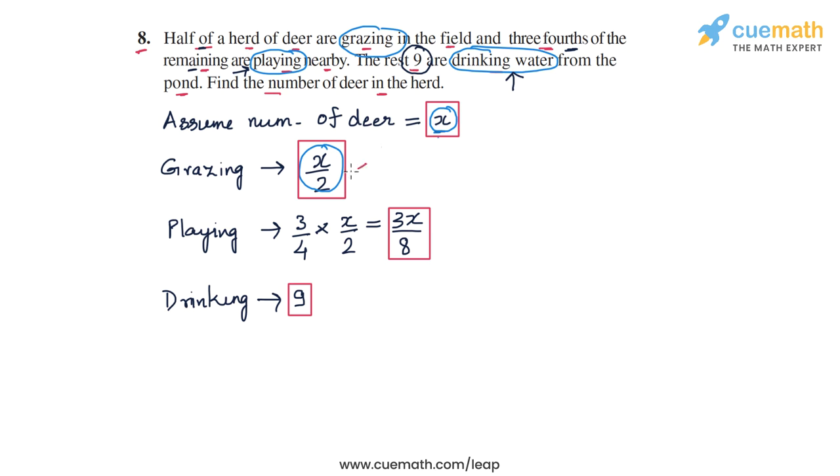So the sum of x by 2, 3x by 8, and 9 should equal the total strength, which is x. This is how we can set up an equation in x.